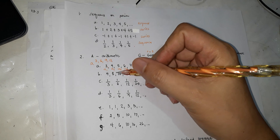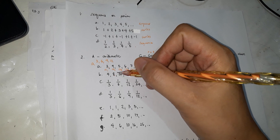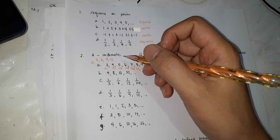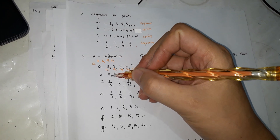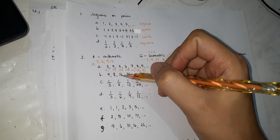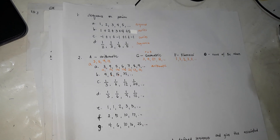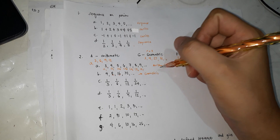Next, 4, 8, 16, 32. To get 8 from 4, you could add 4 — but checking the next term, that pattern doesn't hold. Instead, multiply by 2: 4 times 2 is 8, 8 times 2 is 16, 16 times 2 is 32. There's a common ratio when multiplying, so this sequence is geometric.